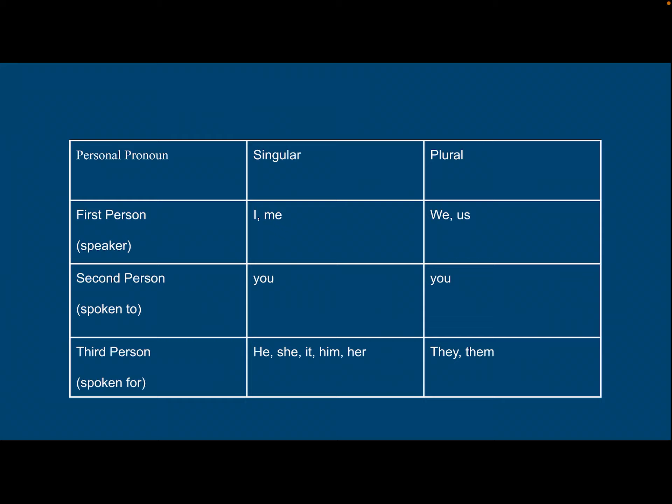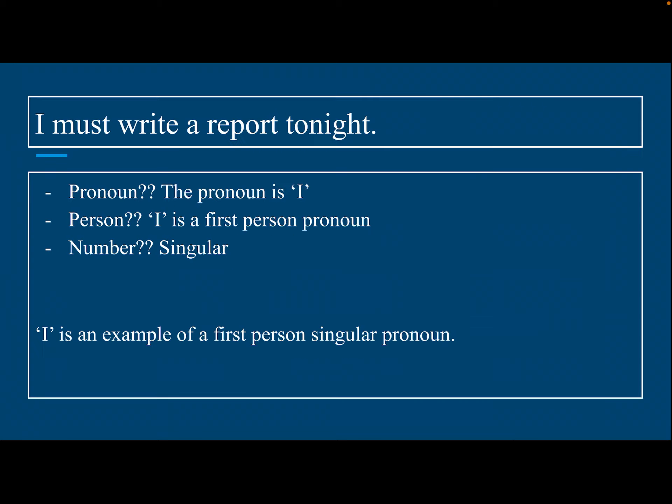If I'm doing second person — someone being spoken to — and it's just one person, it's singular and you use you. But if there's more than one person being spoken to, you still use you. Second person is a little tricky between singular and plural; you have to use context clues to figure out if it's talking to more than one person or just one. Third person is when a noun is being spoken for: he, she, it, him, her are common singular third person, while they and them are plural third person.